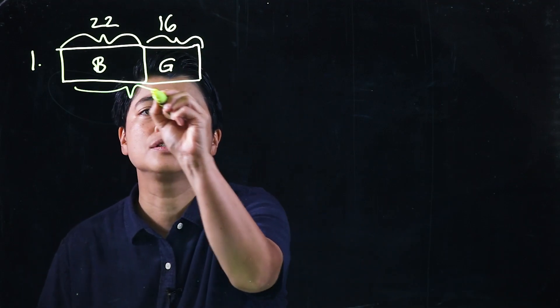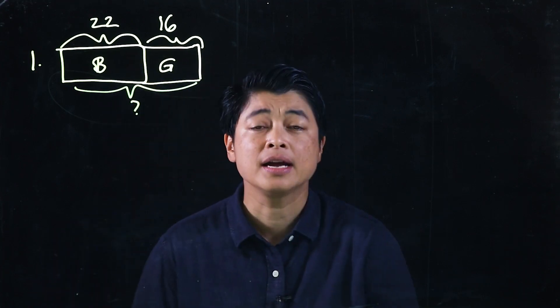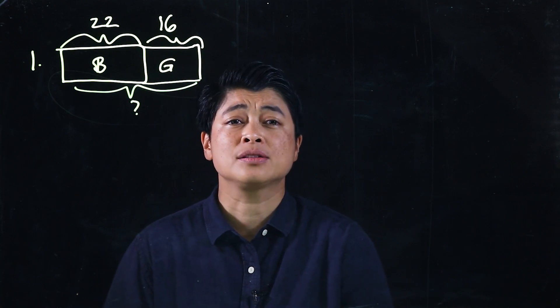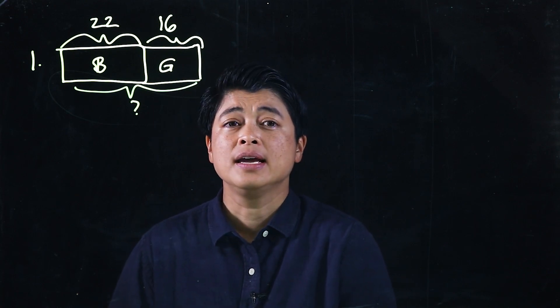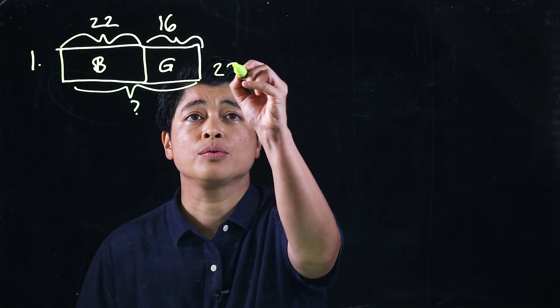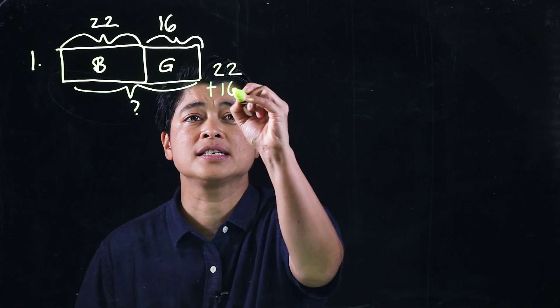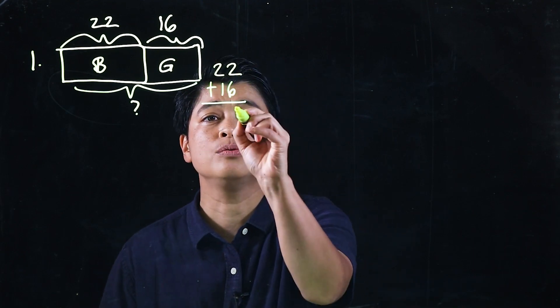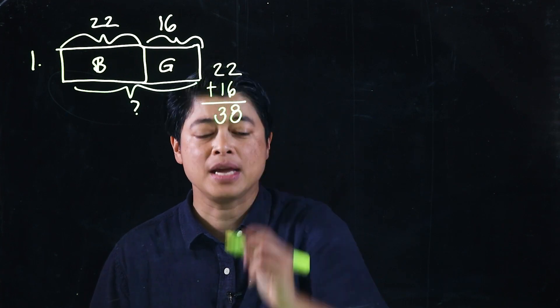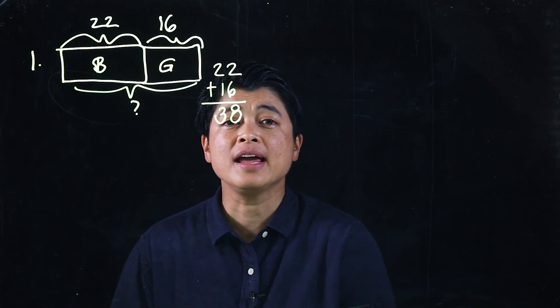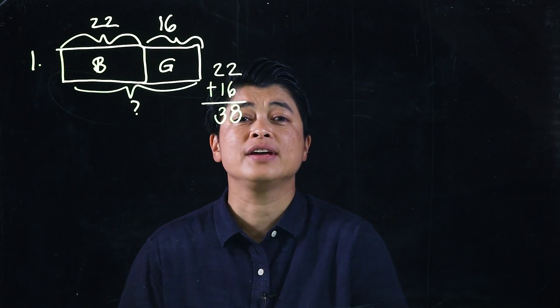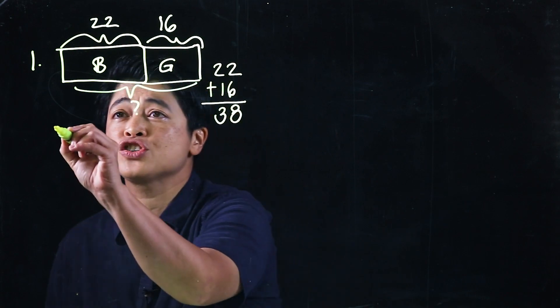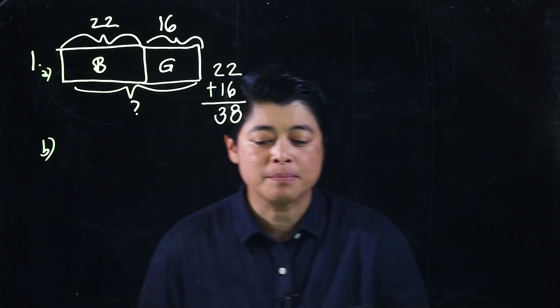The question is how many students are there in her class. So clearly, the question is the total. So if it's the total, we need to add. And to be consistent, we start with 22 plus 16. And again, consistency says we start with 6, add 2, that would be 8, and then this will be 3. So there will be 38 total children in Vicky's class, answering question A.